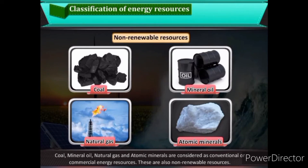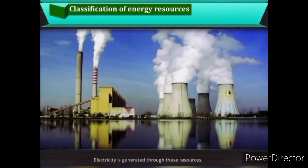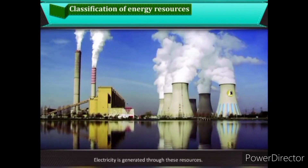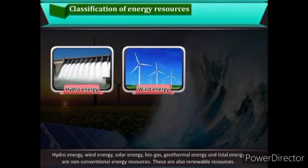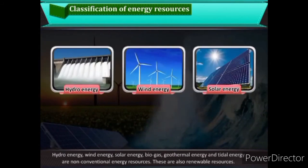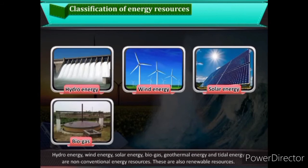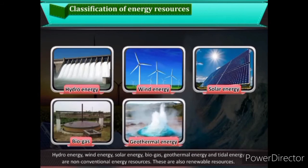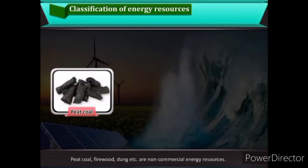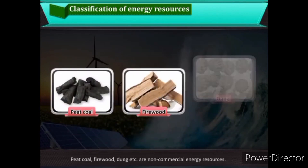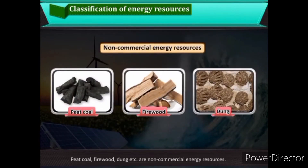Electricity is generated through conventional resources. Hydro energy, wind energy, solar energy, biogas, geothermal energy, and tidal energy are non-conventional energy resources and are also renewable resources. Peat, coal, firewood, and dung are non-commercial energy resources.